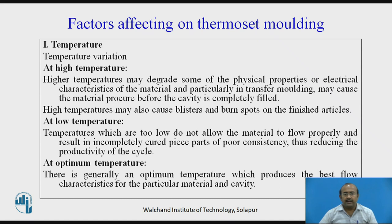Higher temperature may degrade some of the physical properties or electrical characteristics of the material, and particularly in transfer molding may cause the material to precure before the cavity is completely filled. High temperature may also cause blisters and burn spots on the finished articles. Temperatures which are too low do not allow the material to flow properly and result in incompletely cured piece parts of poor consistency, thus reducing the productivity of the cycle. At the optimum temperature, there is generally an optimum point which produces the best flow characteristics for the particular material and cavity.